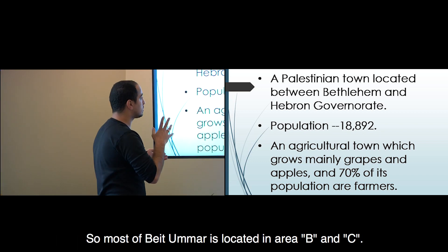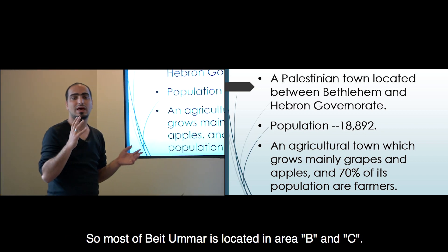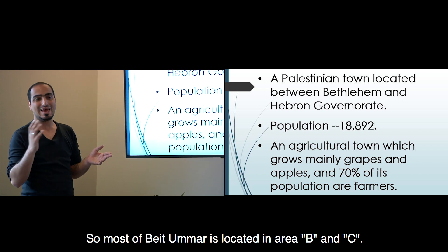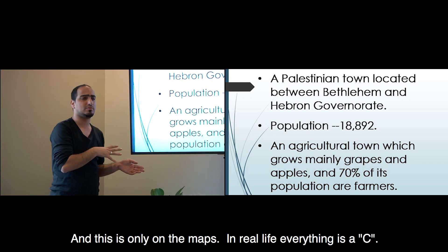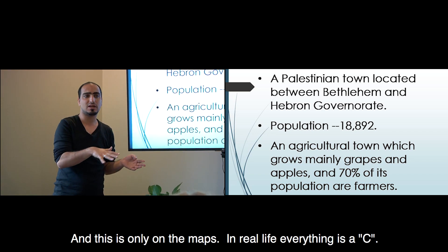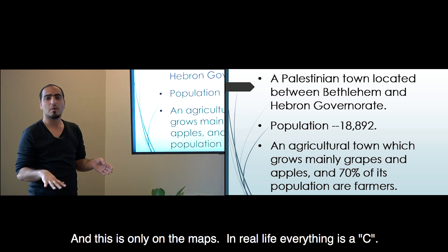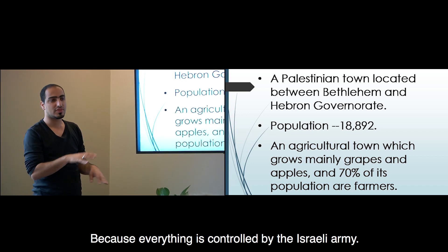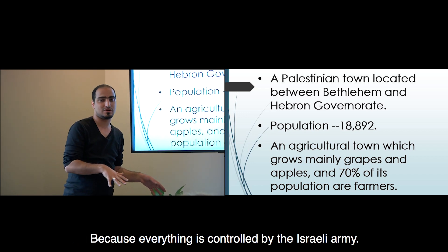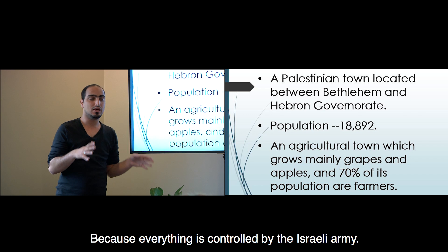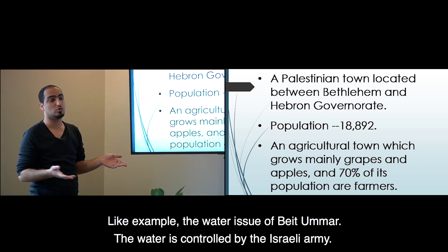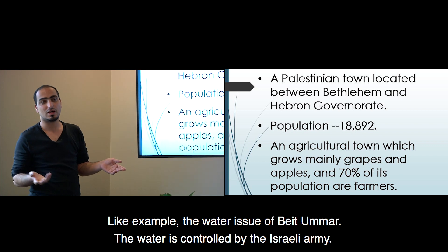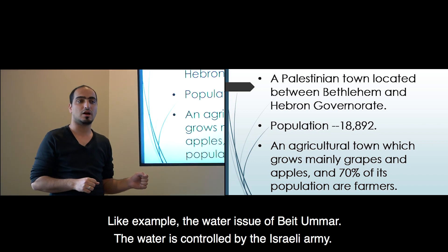Most of Beit Omar is located in Area B and C. But this is only on the maps - in real life, everything is controlled by the Israeli army. For example, the water issue in Beit Omar: the water is controlled by the Israeli army.